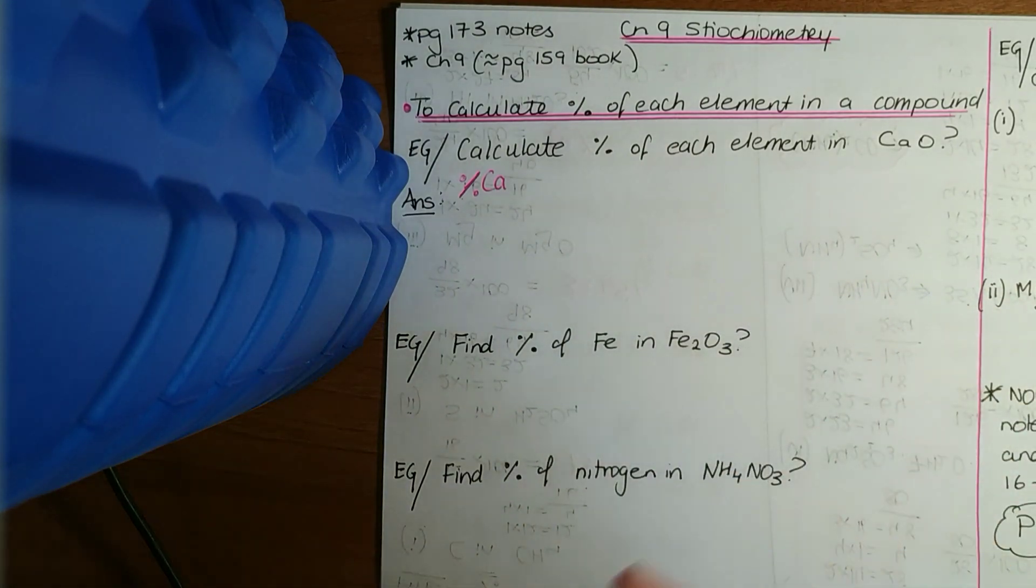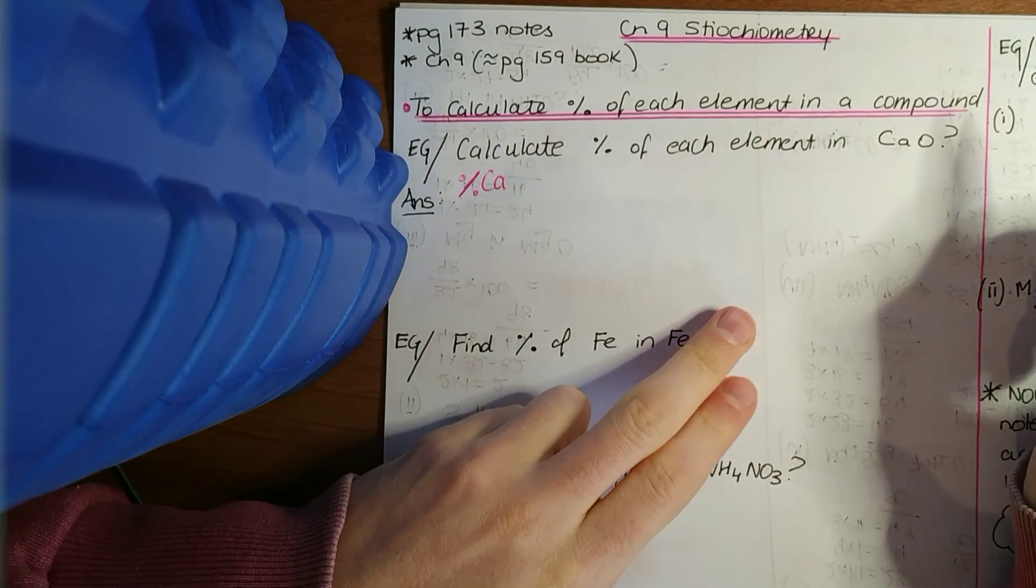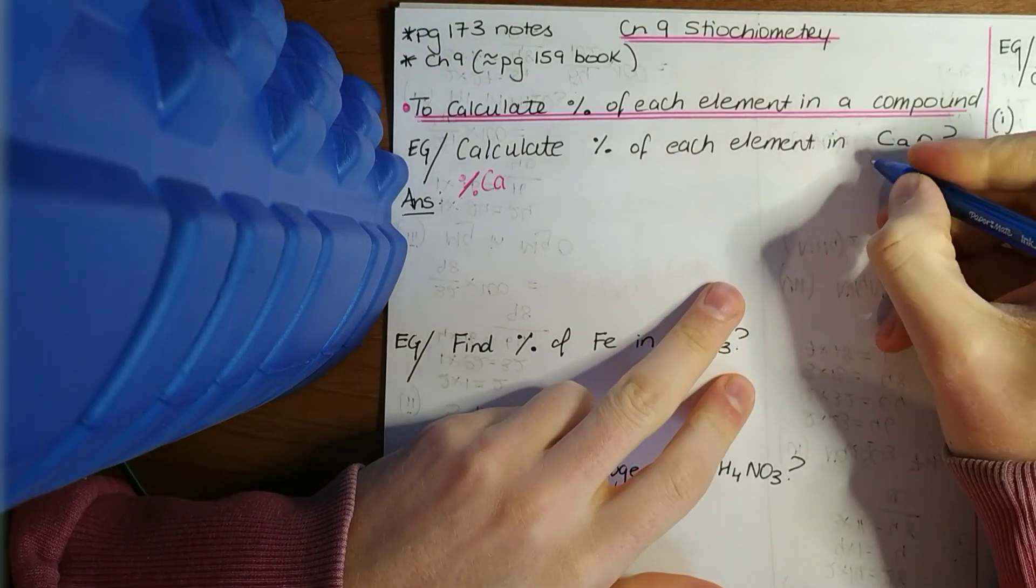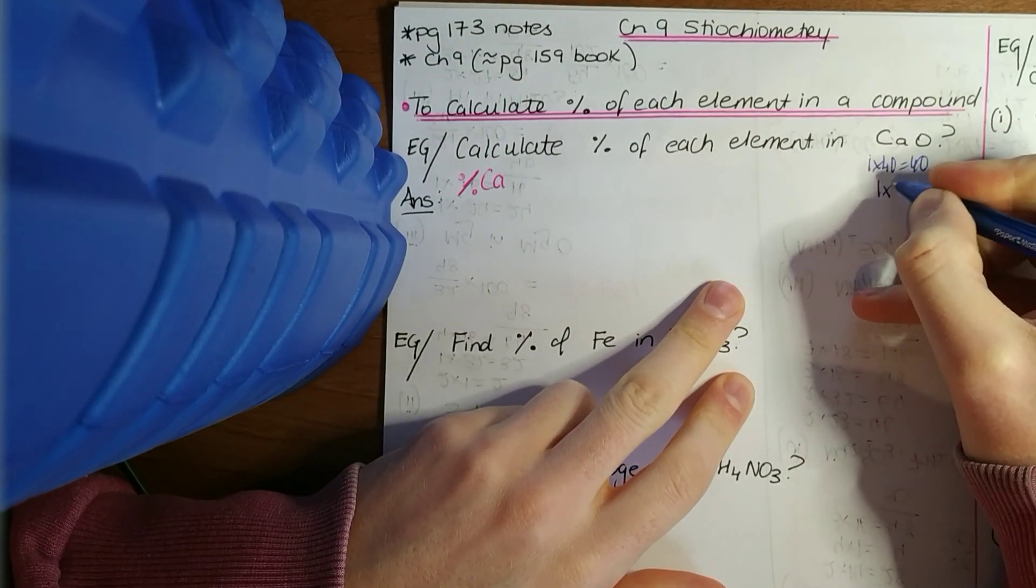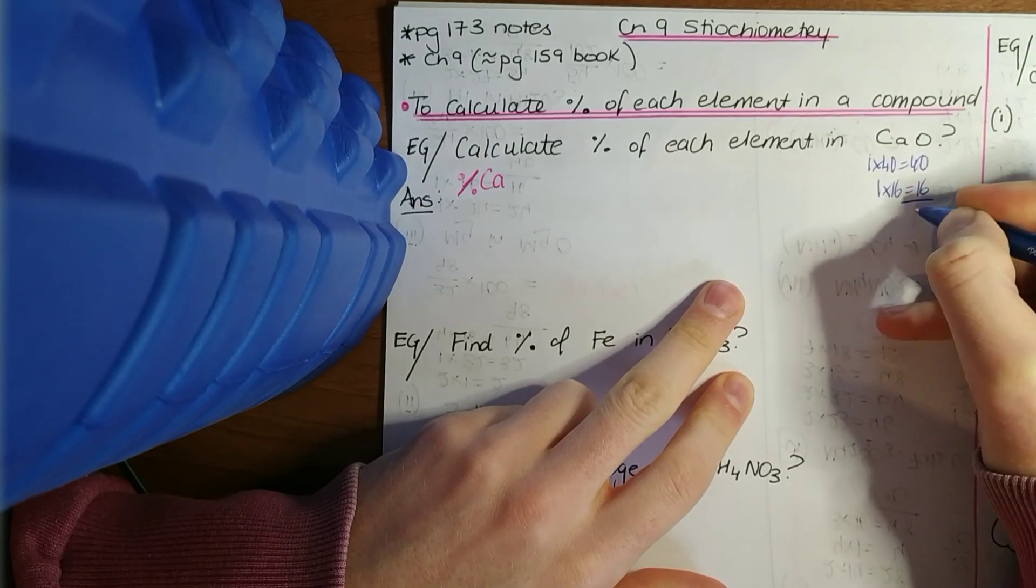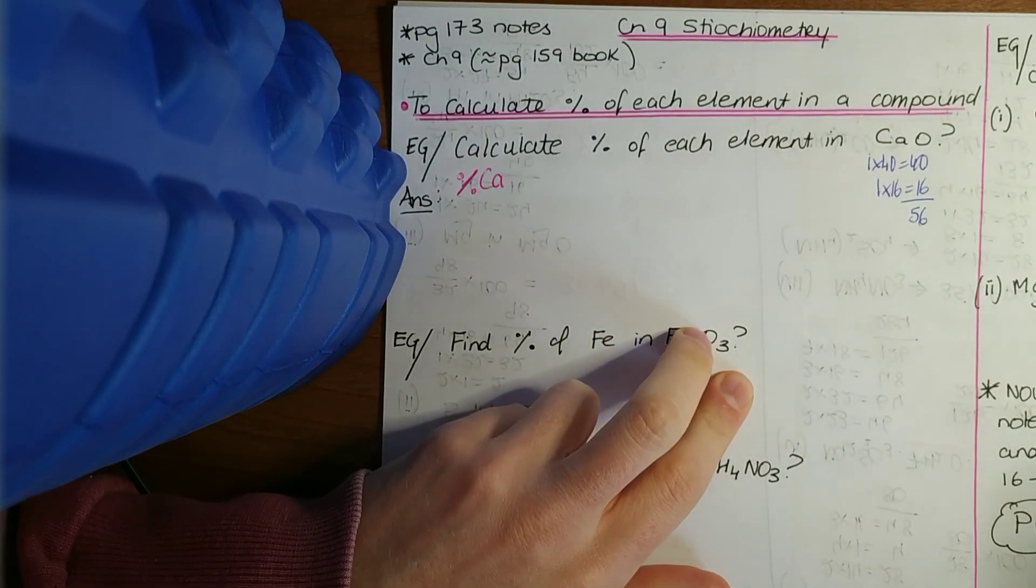So they want you to work out the percentage of calcium and the percentage of oxygen. The first thing you've got to do is work out the total mass, the relative molecular mass of CaO. If you take out your periodic table, the mass number of calcium is 40, so 1 by 40 is 40, and oxygen is 16, so your relative molecular mass is 56.